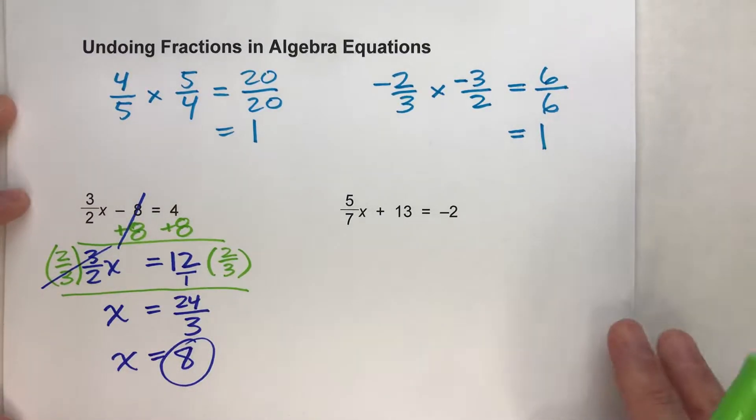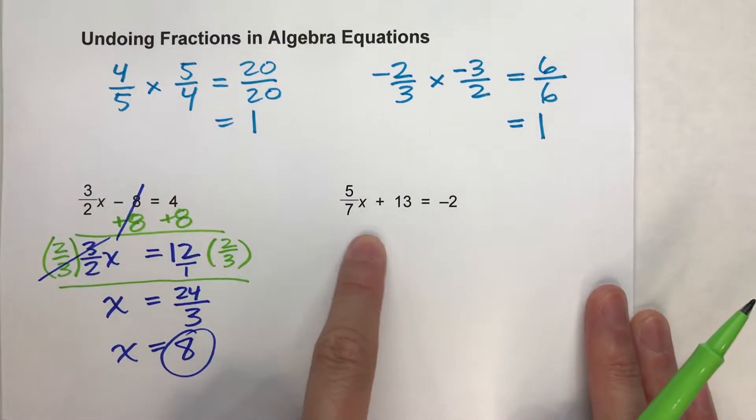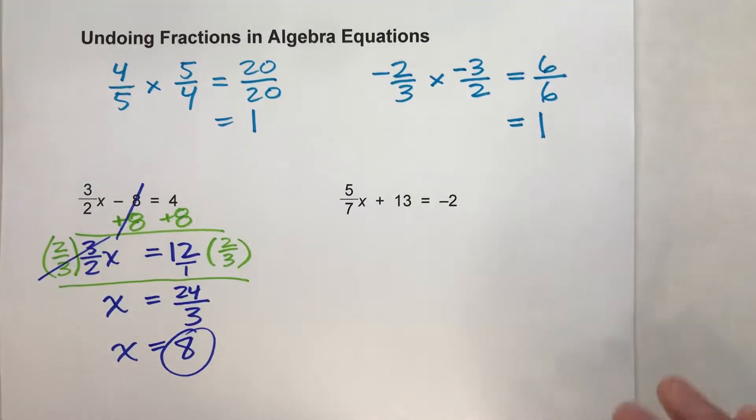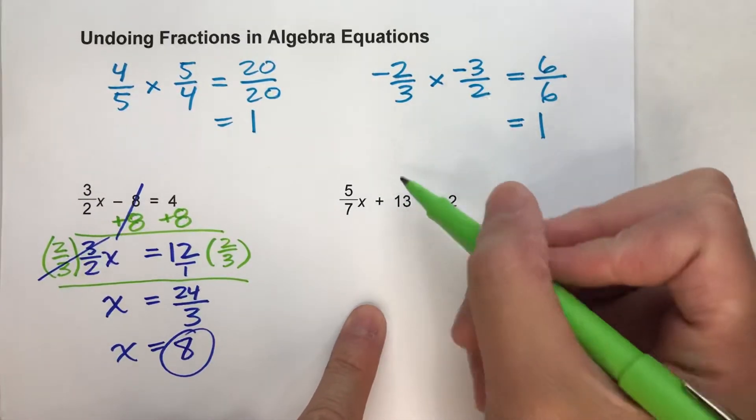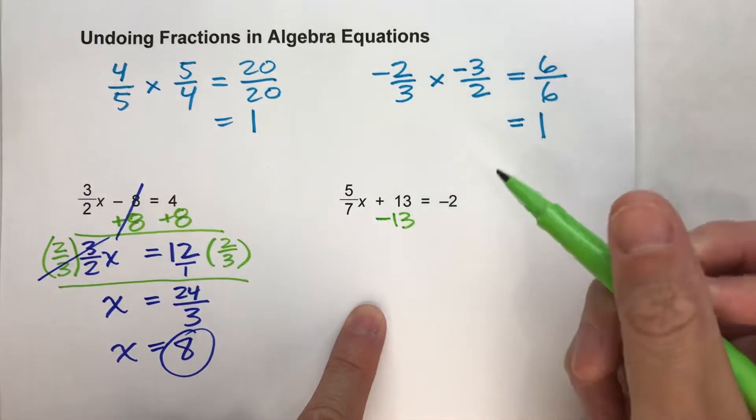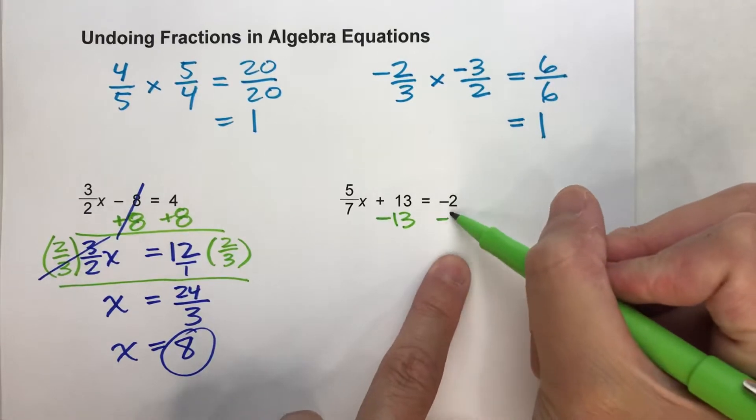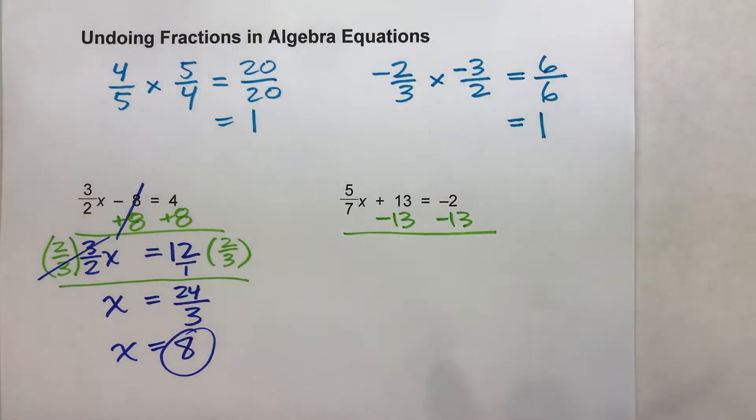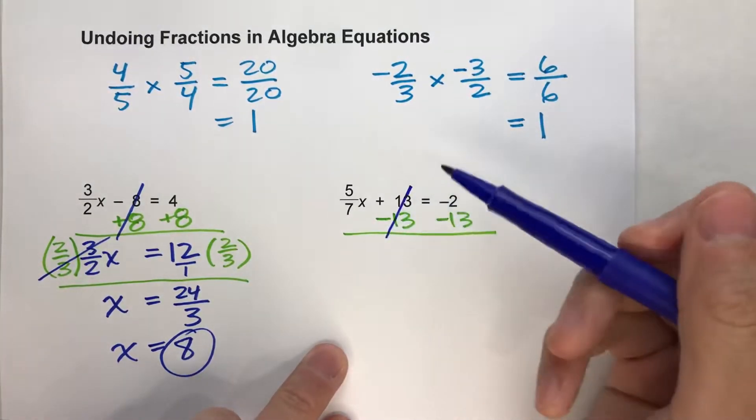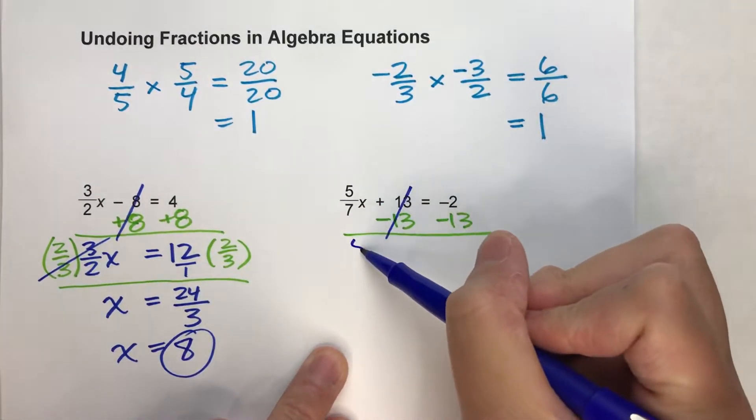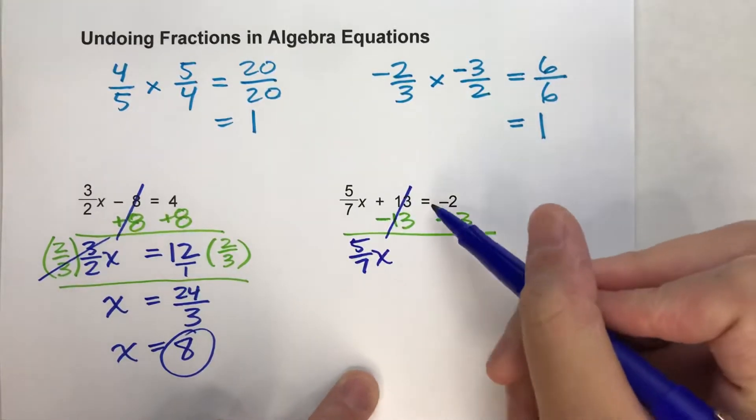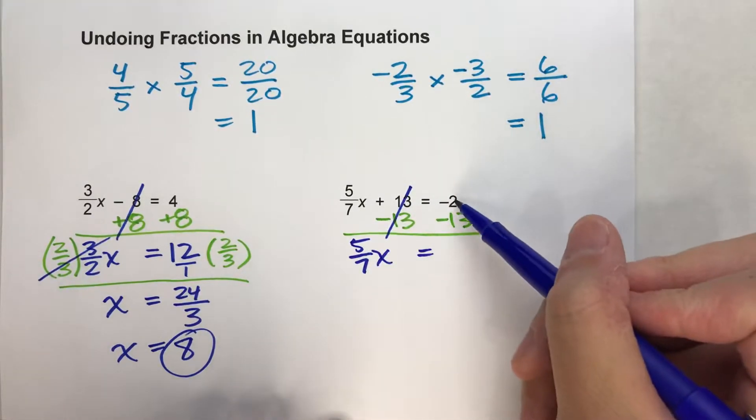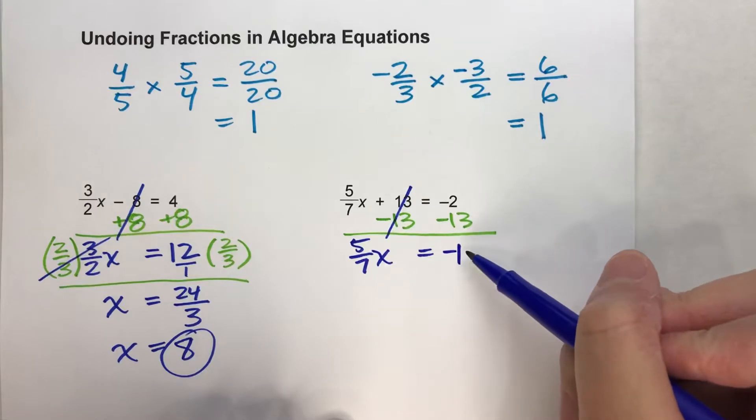Here we go. 5 sevenths x plus 13 equals negative 2. First step, got to undo that plus 13, so I'm going to subtract 13. But what I do to one side of the equal sign, I have to do to the other side. When I do that, these adding and subtracting 13s undo each other. But 5 sevenths times x drops down, equals drops down. Negative 2 minus 13 is negative 15.